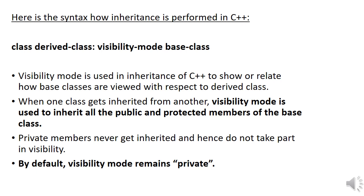The syntax for performing inheritance in C++ is: class DerivedClassName : visibility_mode BaseClassName. The visibility mode indicates how base classes are viewed with respect to the derived class. When a class is inherited, the visibility mode is used to inherit all public and protected members of the base class. Private members never get inherited. By default, visibility mode remains private.